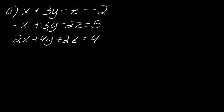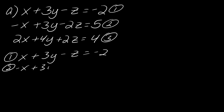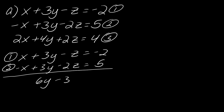For this first example, I'm going to label my three equations. As I look through the problem set, I notice I could pretty easily eliminate the x's. I like to start with the path of least resistance, so I'll start there. I'll rewrite out the equations so that I can effectively eliminate. If I just add straight down, my x's drop out and I'm left with 6y minus 3z equals 3. I'm going to call this equation A.